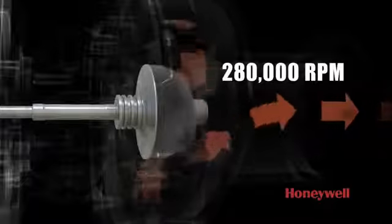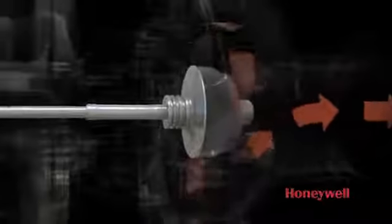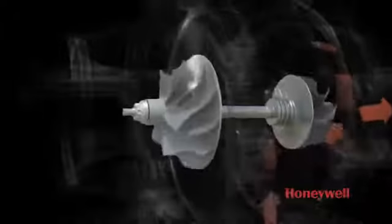This highly engineered wheel spins quite fast, reaching speeds of up to 280,000 RPM. On the other side of the turbine wheel, connected by a shaft, is a compressor wheel.